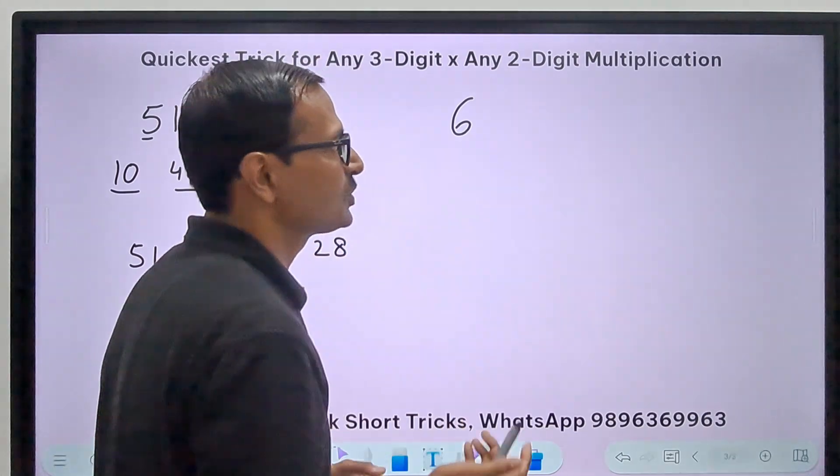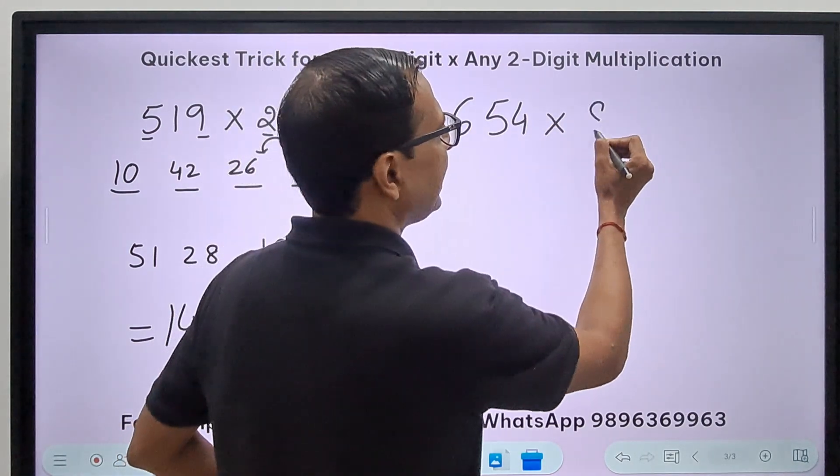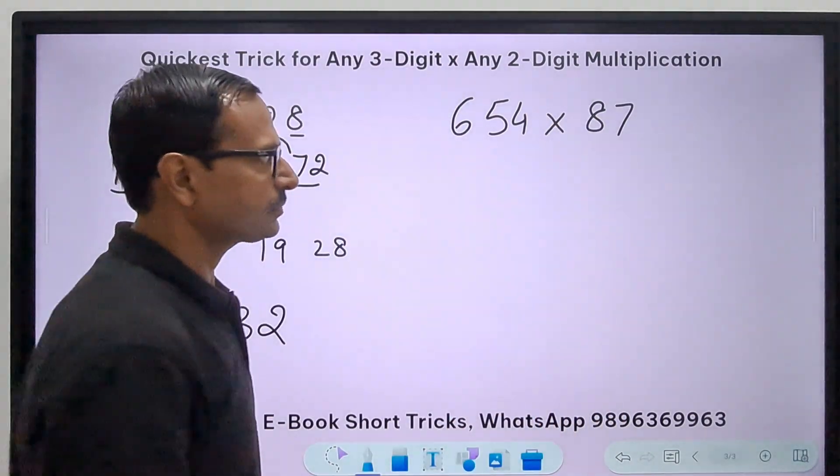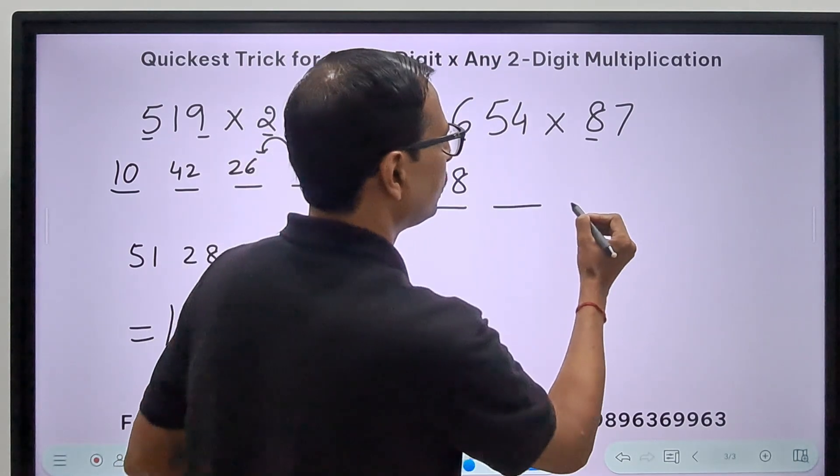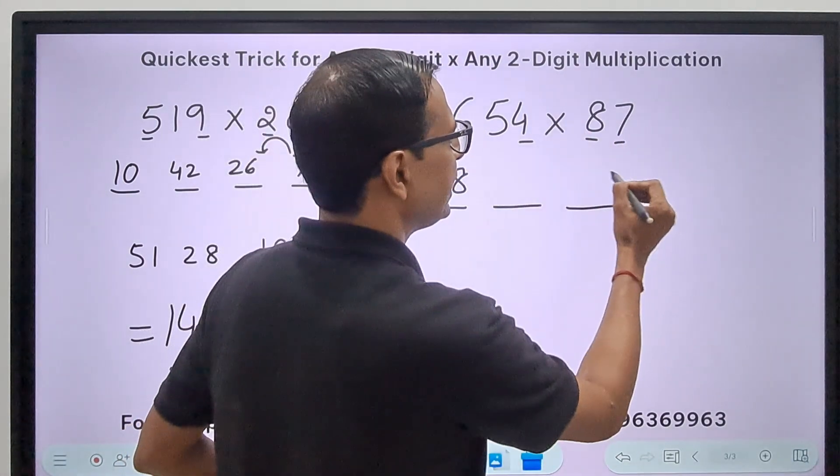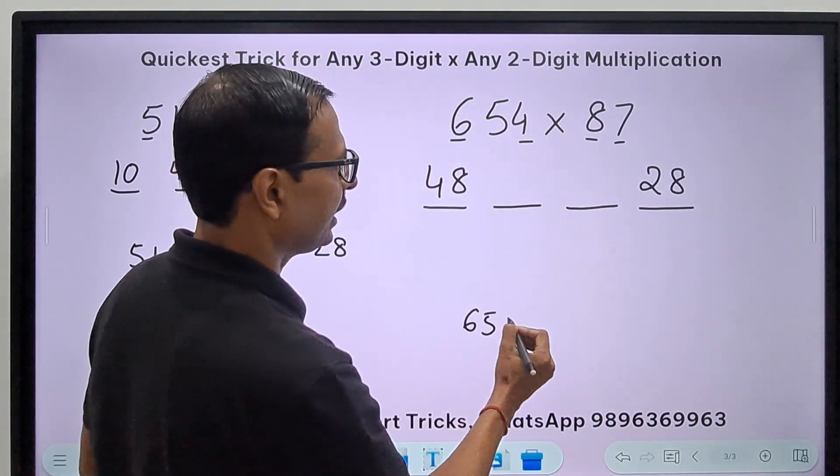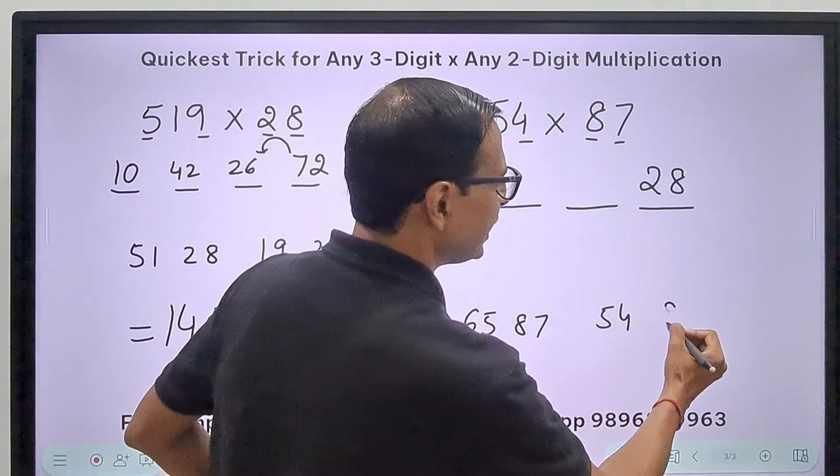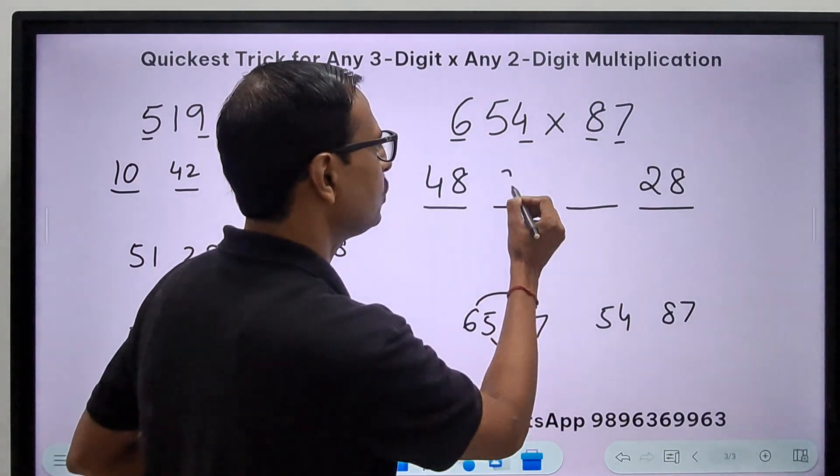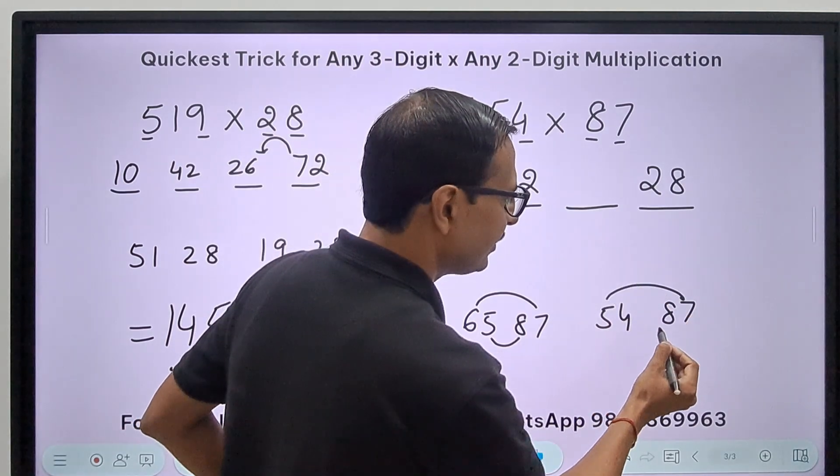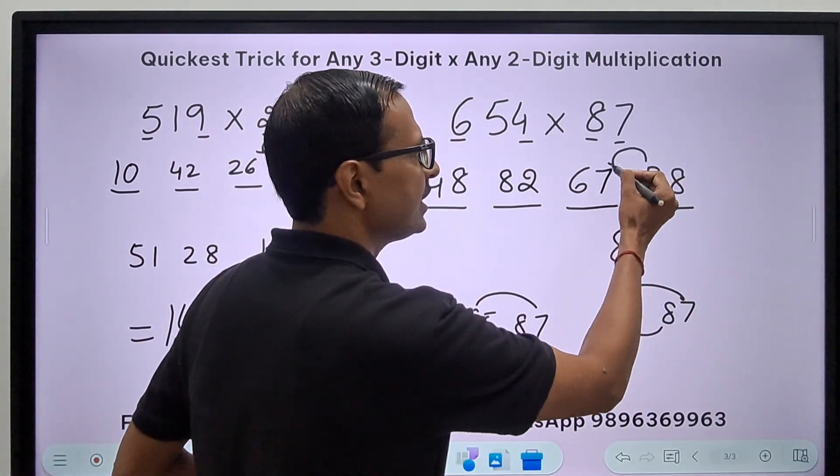Let's take one more example very quickly. Let's take larger digits so that you are convinced the method works for everything. I'm not taking zeros—zero makes it much easier. So 654 times 87. First digit, first digit: 8 times 6 is 48. I need two more. And the last digit, last digit is 28.